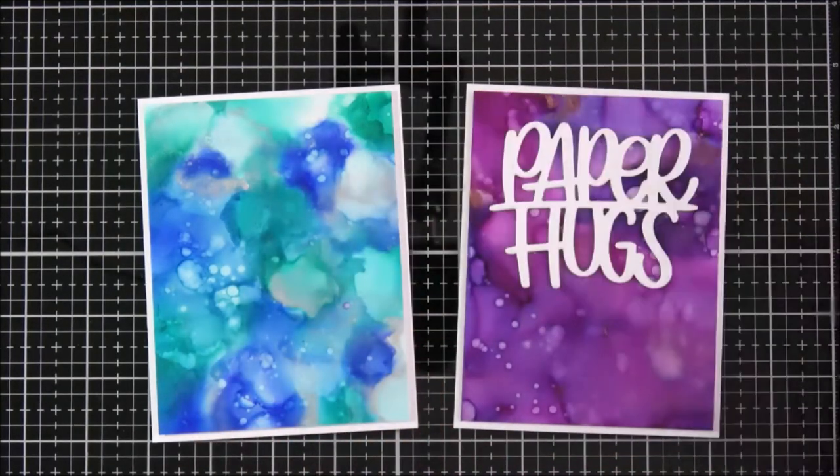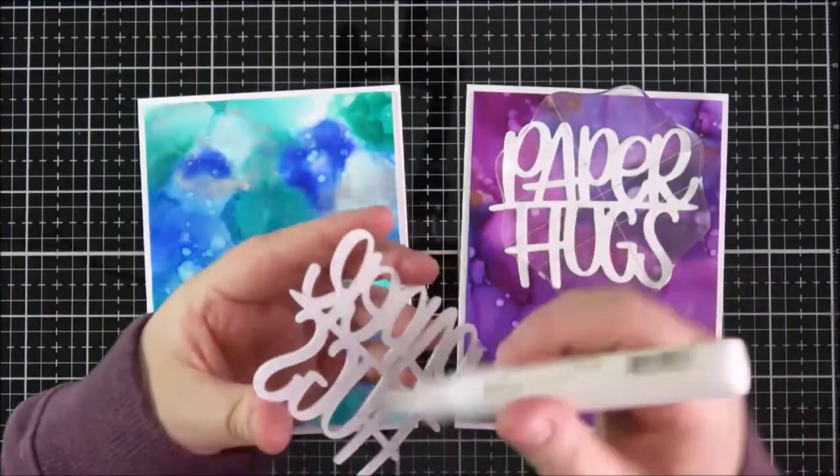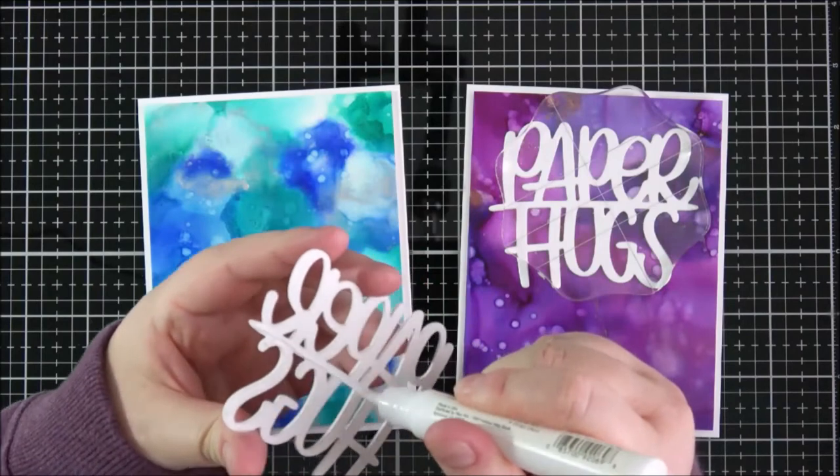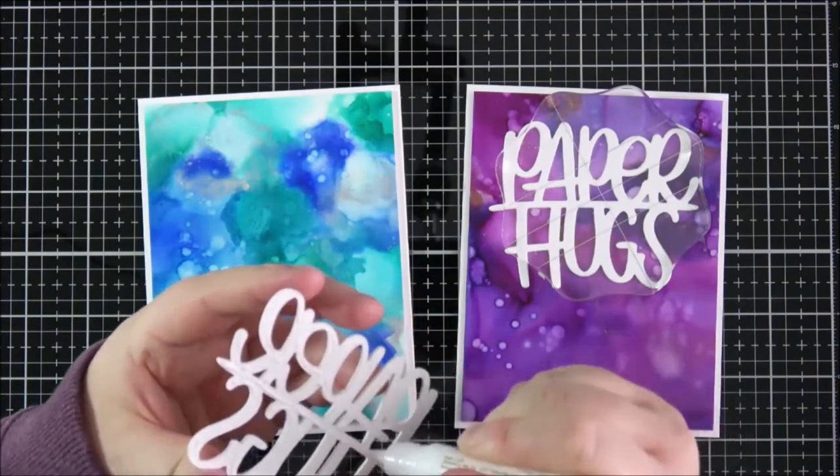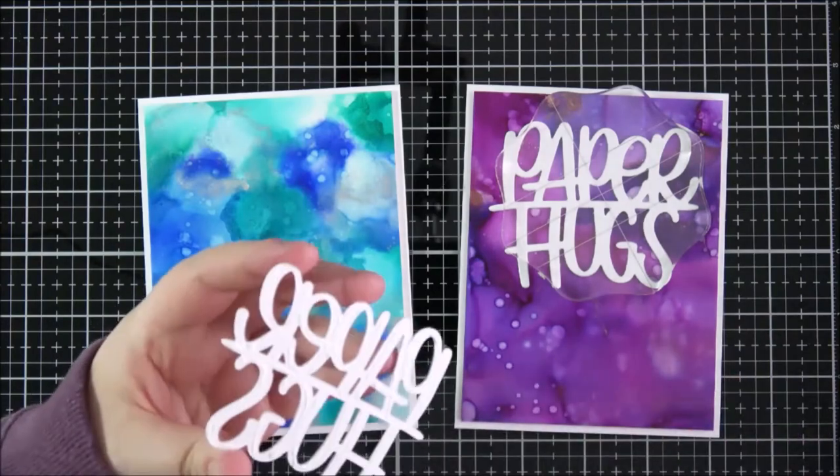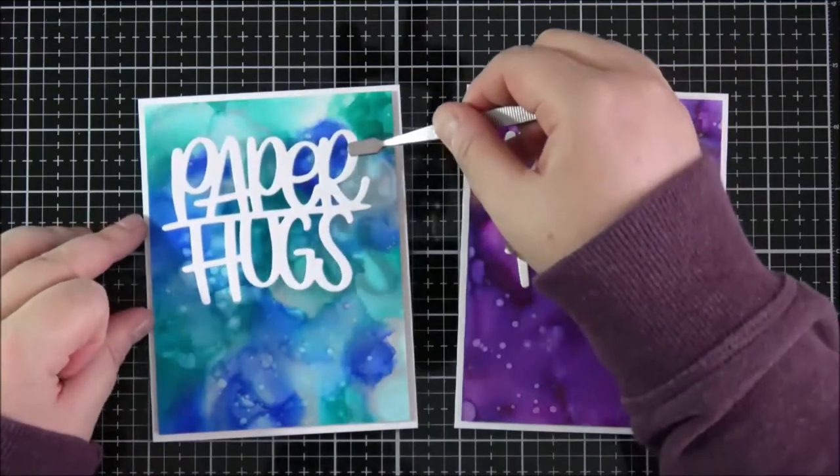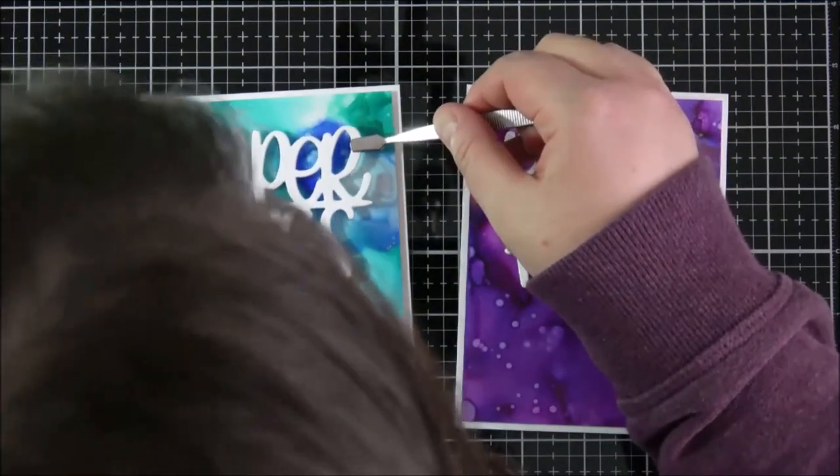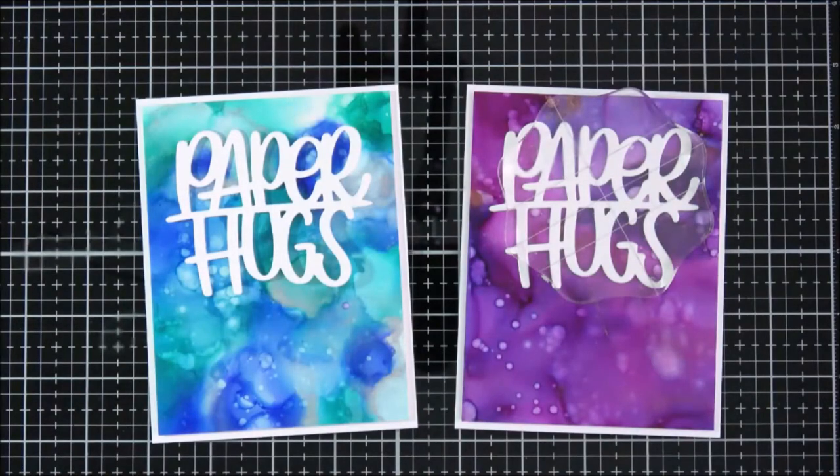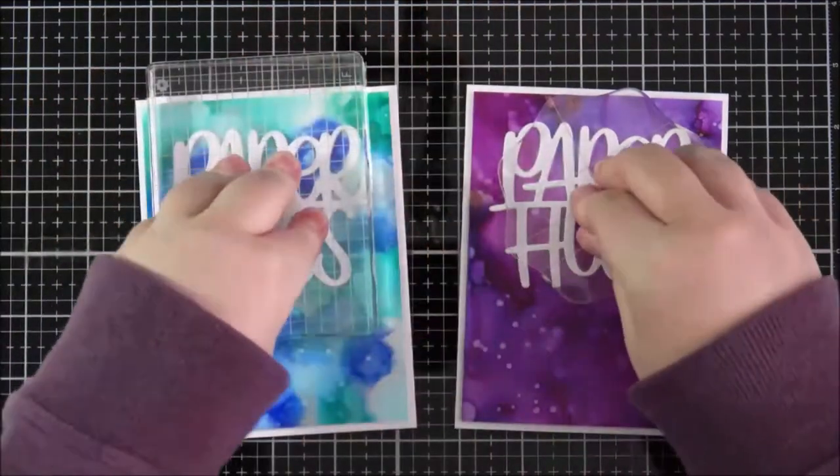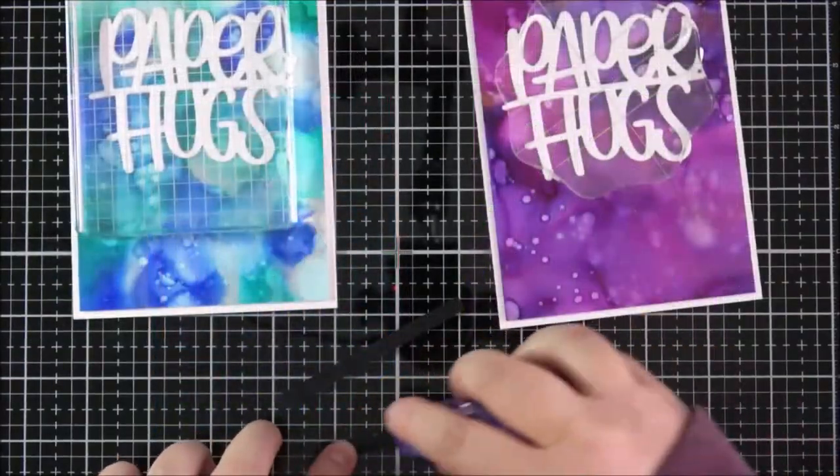In the video and just doing the exact same thing for the other one. I do like that there's a line in between the paper and the hugs. I do kind of cover that up with my accompanying sentiment and I think it looks nice either way. So just placing that down and then I'm just adding some acrylic blocks over the top of that just while the glue dries. It's going to make sure that that sticks really nicely.